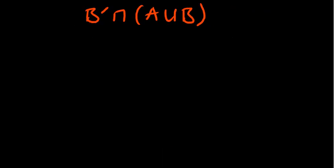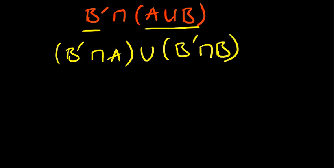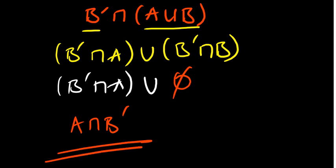For the next one, we have B complement intersection (A union B). From the distributive law, this gives B complement intersection A, union B complement intersection B. The intersection of B complement with B is an empty set — a set and its complement don't intersect. So we have B complement intersection A, union empty set, which simplifies to A intersection B complement, which is also A minus B. That is our solution.